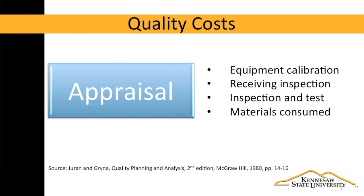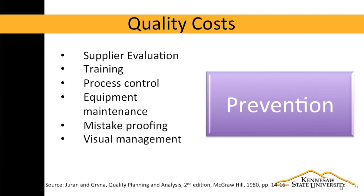Remember, though, that these are the costs of good quality. If our appraisal efforts catch a problem early in the process, we can stop before we've invested more money in that product. Inspection is unavoidable, but over time we might be able to reduce it. The final quality cost is prevention. These costs are often one-time instead of ongoing costs. We may spend money to do capability studies, process control, and training. We can also use lean tools like mistake-proofing and visual management to prevent errors and defects.